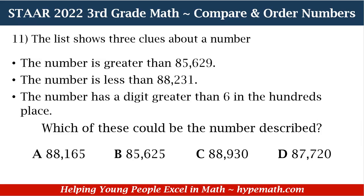Number 11: the list shows three clues about a number. Clue one: the number is greater than 85,629. Clue two: the number is less than 88,231. Clue three: the number has a digit greater than six in the hundreds place. Which of these could be the number described? Is it A, 88,165? B, 85,625? C, 88,930? Or D, 87,720?